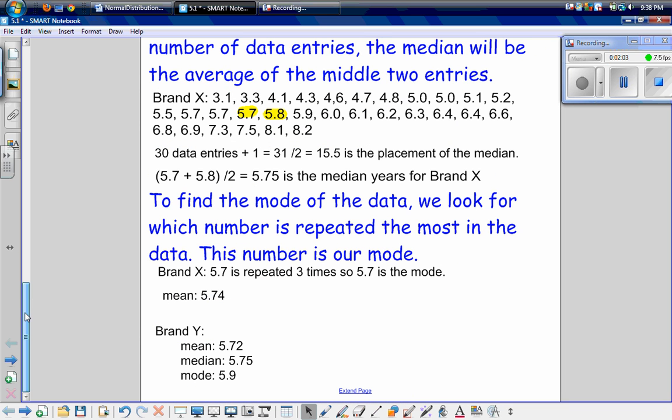And then to find the mode of the data, simply look for which number is repeated the most in the data. And this number is our mode. So for brand X, 5.7 is repeated three times. So 5.7 is the mode.